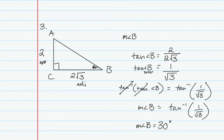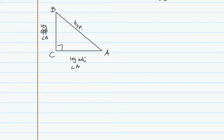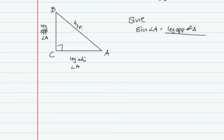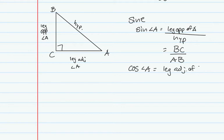Sometimes you might have to round, and the directions will tell you to do so. In section 7.6, we begin using the sine and cosine ratios. The sine of angle A equals the leg opposite over the hypotenuse — in this case BC over AB. The cosine of angle A equals the leg adjacent over the hypotenuse, which is AC over AB. We set up those ratios similarly to tangent and solve for sides and angles.